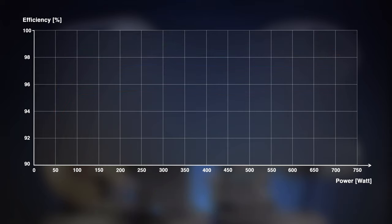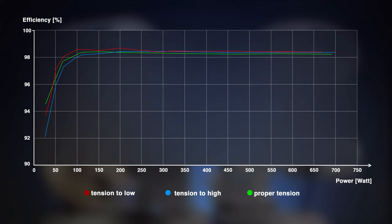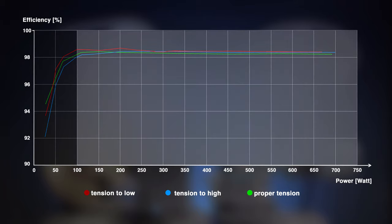To show you what difference the belt tension actually makes, let me display the curves of a loose belt and an overly tight belt in relation to the properly adjusted one. As we expected, this mainly affects the efficiency in the lower power range. At the higher power rates, the efficiency does not depend on the belt tension anymore.